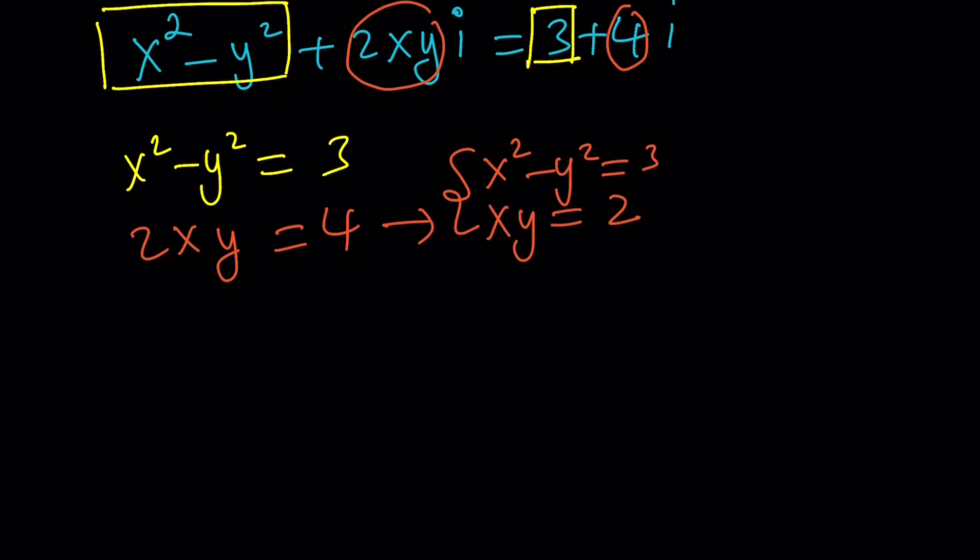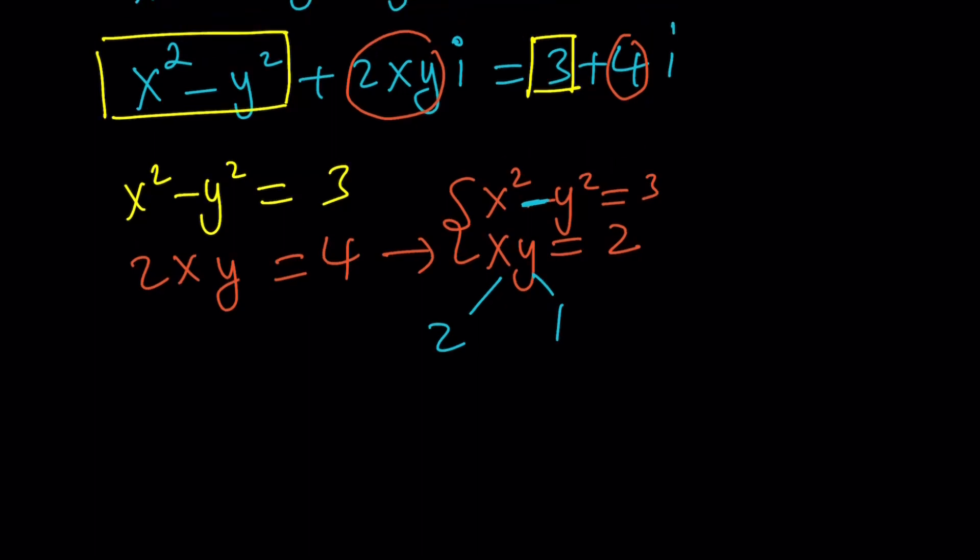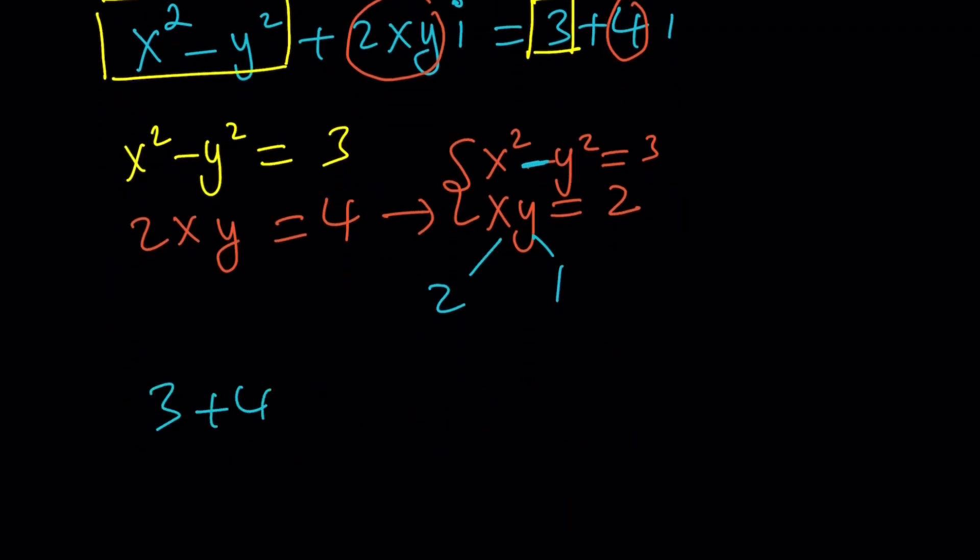We can divide both sides by 2 and write this as xy equals 2 and x squared minus y squared equals 3. Now think about this system. Can you find two numbers whose product is 2 and whose difference of squares is 3? Well, that should be fairly easy, right? 2 and 1. x and y are not interchangeable because we're looking at a difference here. So if x and y are known, then one of the square roots of this number is going to be x plus yi, which is 2 plus i. The other one is going to be negative 2 minus i because it's just the opposite.